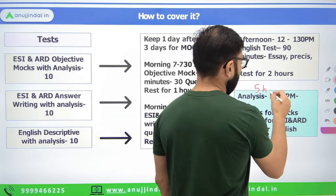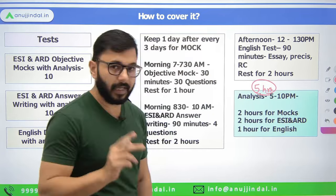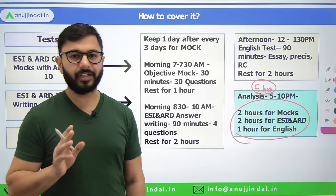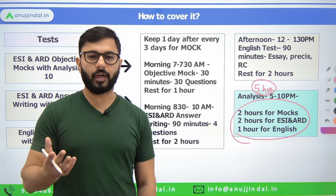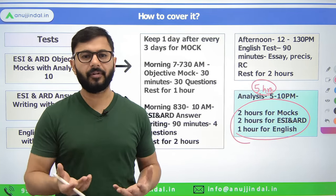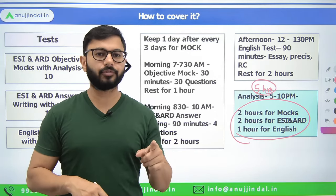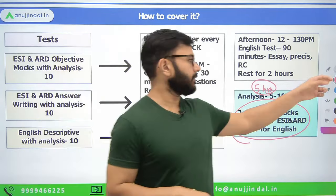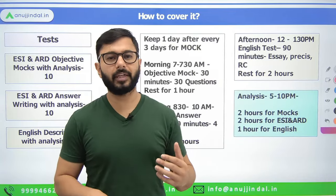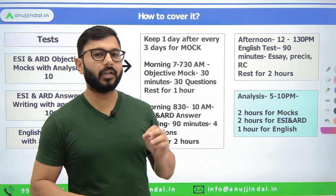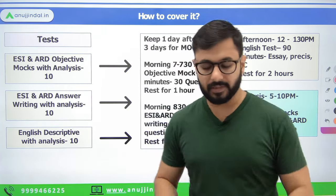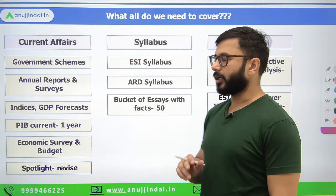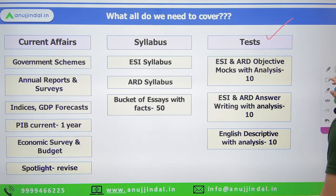After a longer rest — by around 3:30 pm you'll be tired — the work is only half finished. The remaining half starts with a 5-hour slot where you analyze all three papers thoroughly. Sit down and analyze yourself — you will not wait for anyone else to tell you what is right or wrong. Go through your own answers and try to figure it out. For objective it's easy, English is also manageable, but answer writing may need effort. This has to be done every fourth day — after every three days, one day for this, no matter what.